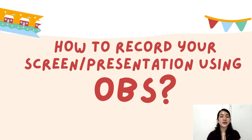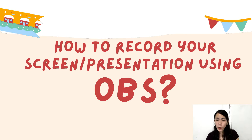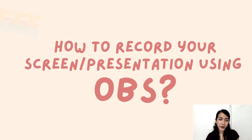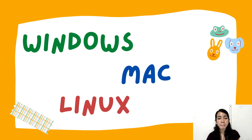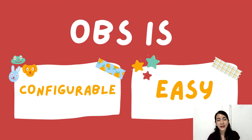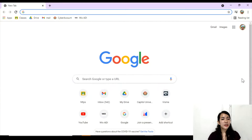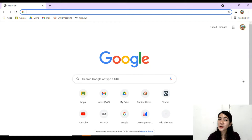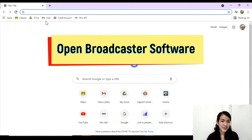In this video, I'm going to show you how to record your screen using OBS. OBS is a free, open-source software and it works on Windows, Mac, and Linux. In my opinion, this is probably one of the best applications for recording your screen because it is very configurable and very easy to use. The first thing we need to do is download OBS Studio — OBS stands for Open Broadcaster Software.